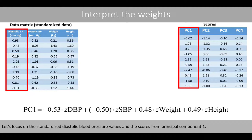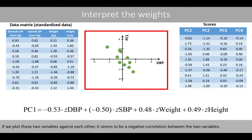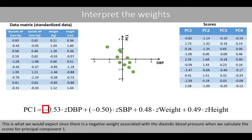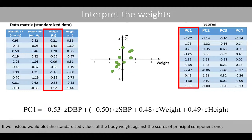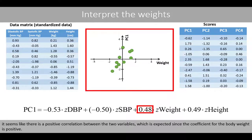Let's focus on the standardized diastolic blood pressure values and the scores for principal component 1. If we plot these two variables against each other, it seems to be a negative correlation between the two variables. This is what we would expect since there is a negative weight associated with the diastolic blood pressure when we calculate the scores for principal component 1. If we instead plot the standardized values of the body weight against the scores of principal component 1, it seems like there is a positive correlation between the two variables, which is expected since the coefficient for the body weight is positive.